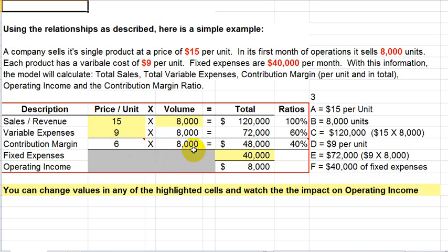So 6 times 8,000 gives us a $48,000 contribution margin. We've added a column here for ratios as well. Once we determine the amount of the contribution margin ratio, the formulas built in will calculate the contribution margin ratio of 40%. So 40% of your $120,000 of sales revenue is $48,000. With the fixed expenses of $40,000 on sales of $120,000, we get operating income of $8,000.